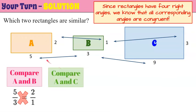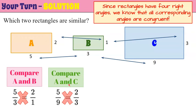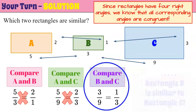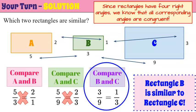Let's compare rectangle B and rectangle C. Our first ratio is 3 to 9, and we want to know if that equals 1 to 3. Cross products: 3×3=9 and 1×9=9 — it checks! Therefore rectangles B and C are similar figures.